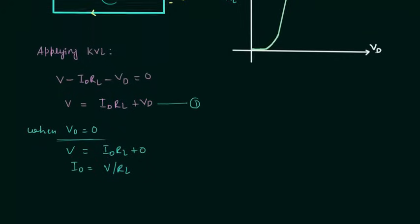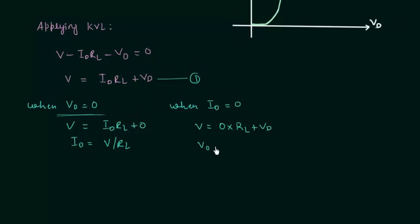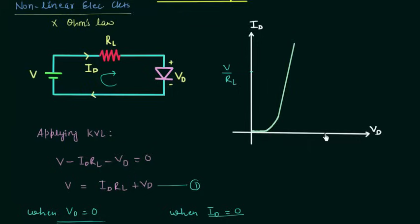Similarly, I will calculate VD when ID is equal to zero. When ID equals zero, equation 1 gives V equals zero times RL plus VD, so VD equals V. Therefore, VD equals V when ID equals zero.